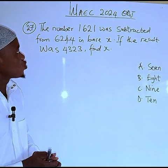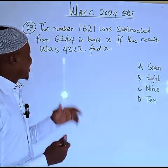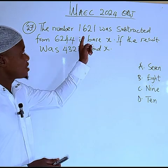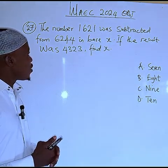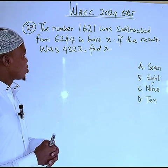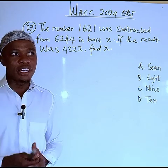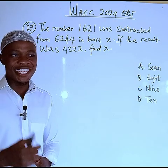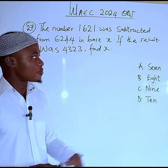Welcome. This is Y2024 objective question number 27. The question states: the number 1621 was subtracted from 6244 in base 8; if the result was 4323, find x. This is very simple — kindly pause, do it, then come back to check whether you are right or not.